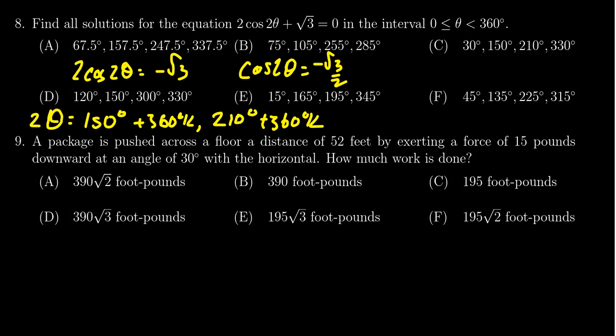So to solve for θ, we have to divide this by 2. In which case, 150 divided by 2 is 75 degrees. Then you get 180k. And then we have to also take 210 and divide that by 2 as well. 210 divided by 2 is going to give us 105. And then we have to also add 180k to that as well.